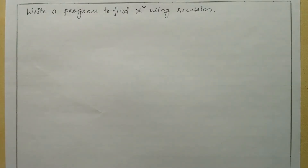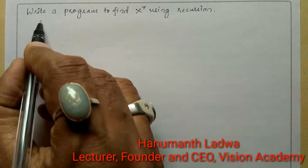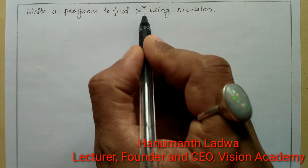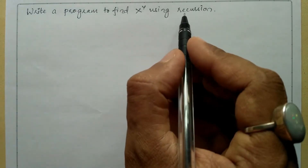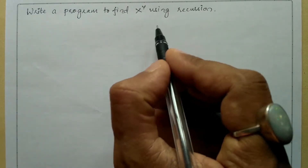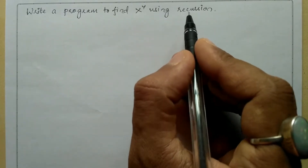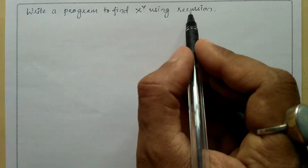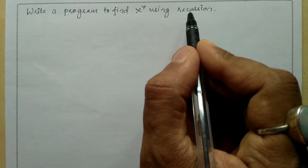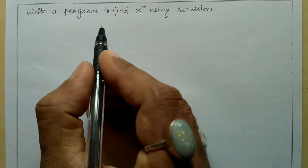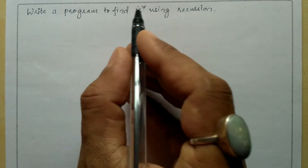Hello and welcome to Vision Academy. My name is Hanumanth Ladwa and in this video we are going to write a program to find x to the power y using recursion. Recursion is a function that calls itself. This particular recursive function will call itself infinitely till the stopping condition is satisfied.